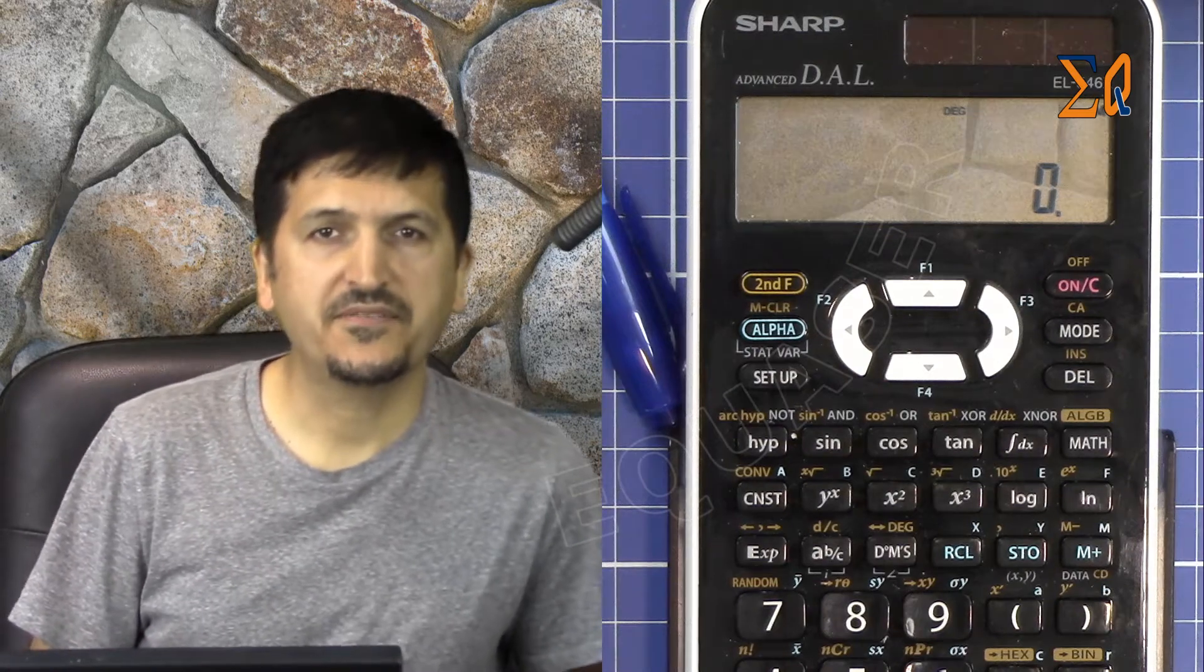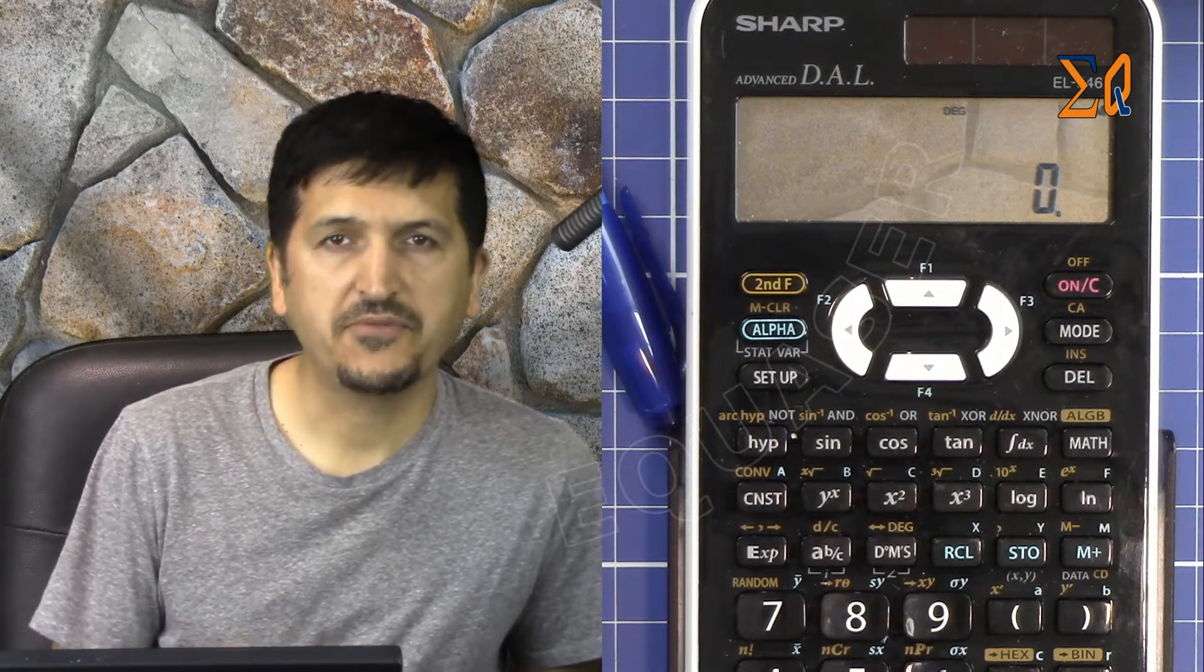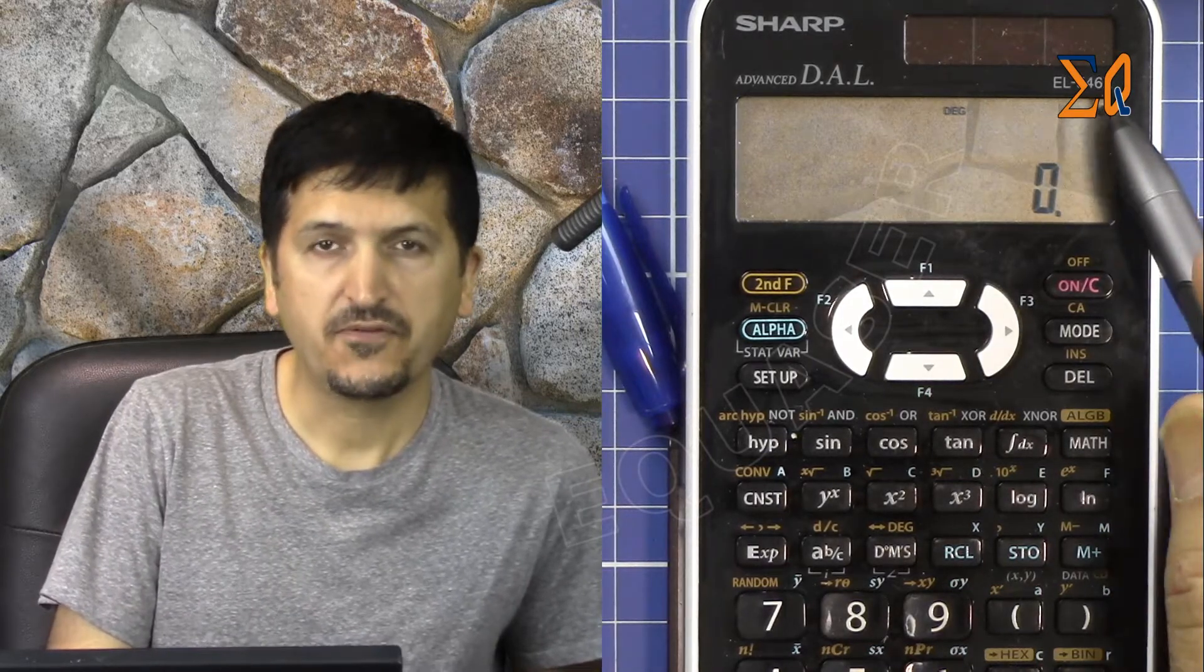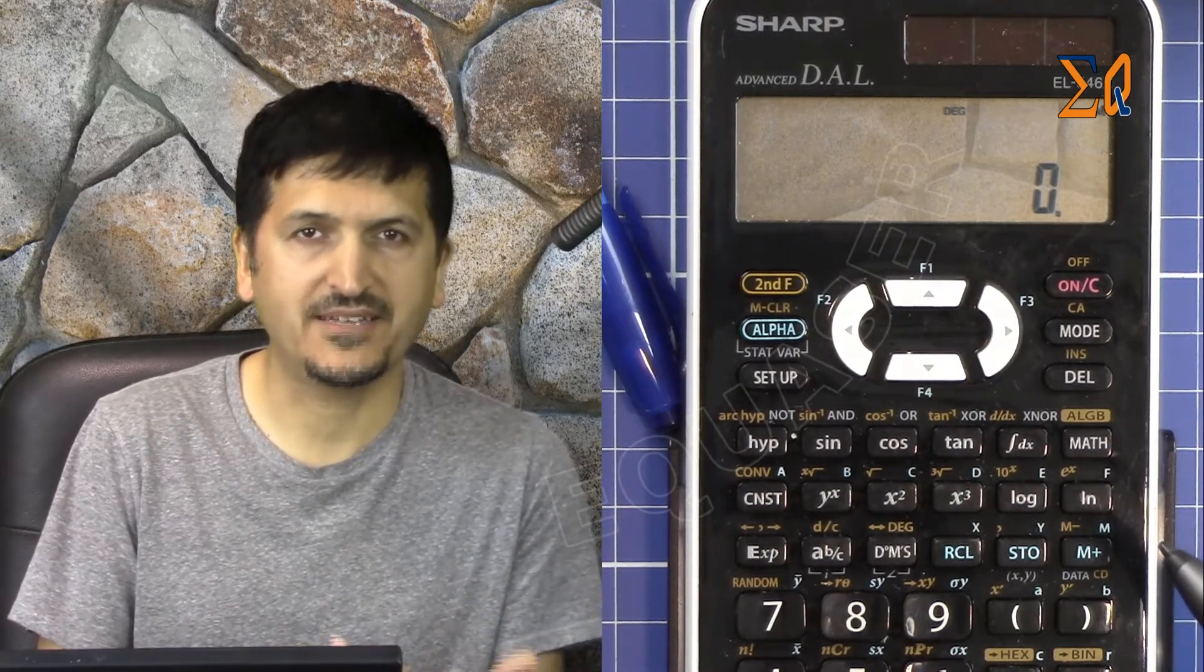Hi, welcome to Equasor. In this video we are going to see how we can use Sharp scientific calculator EL546X and 506X to do simultaneous equations of two variables X and Y or three variables X, Y, and Z, so we can find those values.